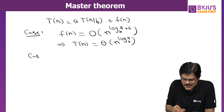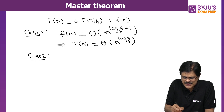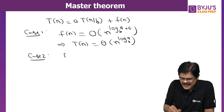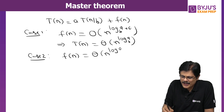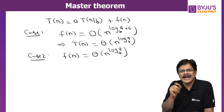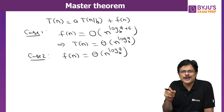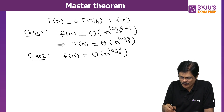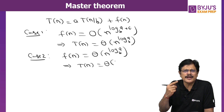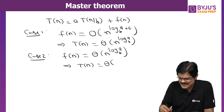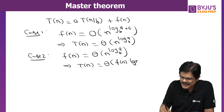Case 2: if F(n) is Θ(n^(log_B A)), meaning F(n) and n^(log_B A) have the same order of growth, then T(n) is Θ(n^(log_B A) · log N), or equivalently Θ(F(n) · log N).